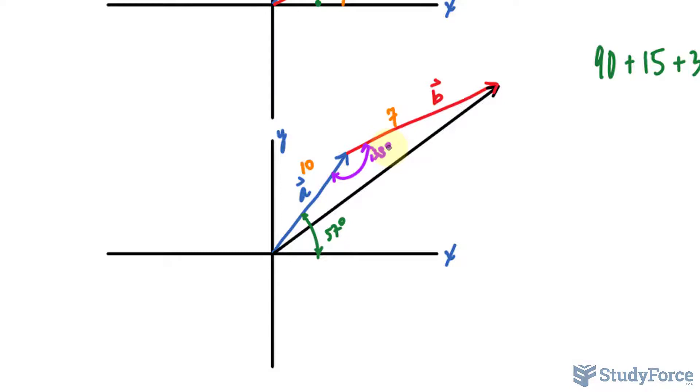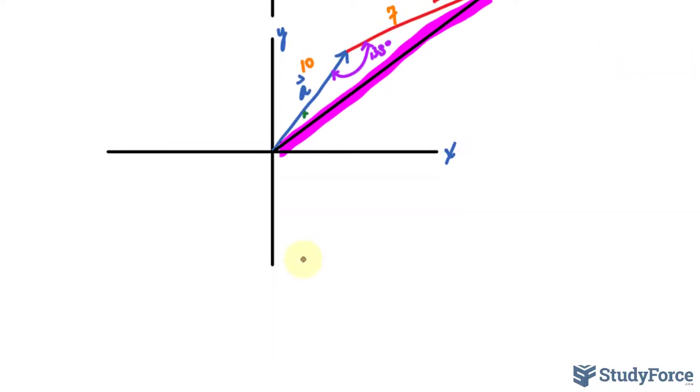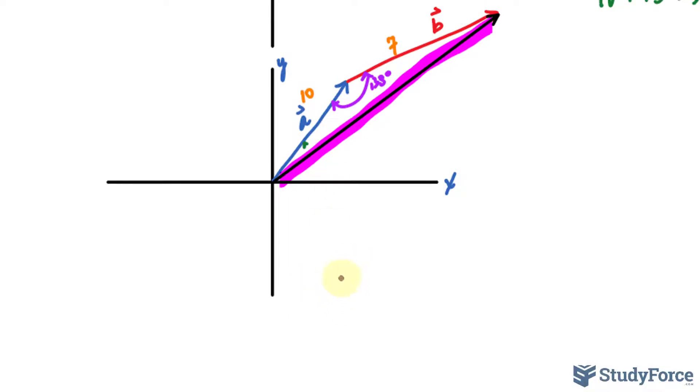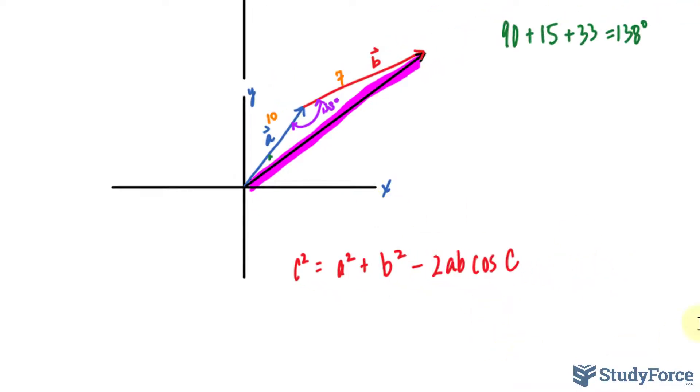The nice thing about this triangle, the one that we've just created, is that we have the magnitude of two sides and an angle in between. Whenever you have two sides that are known and an angle in between them, you can use the cosine law to find out the length of this, which will serve as the magnitude of our vector. The cosine law looks something like this, where we have c squared is equal to a squared plus b squared minus 2ab cosine c. This is important that you remember this.